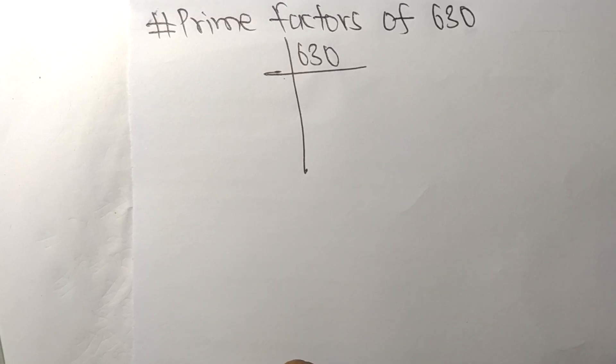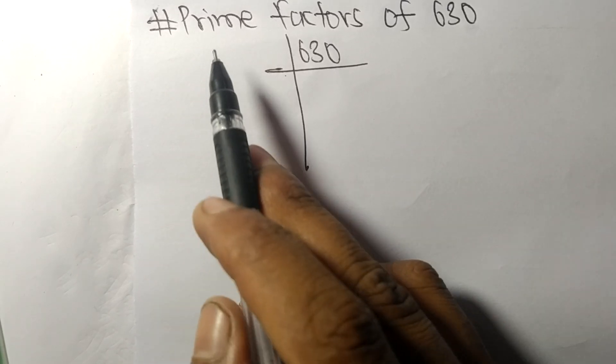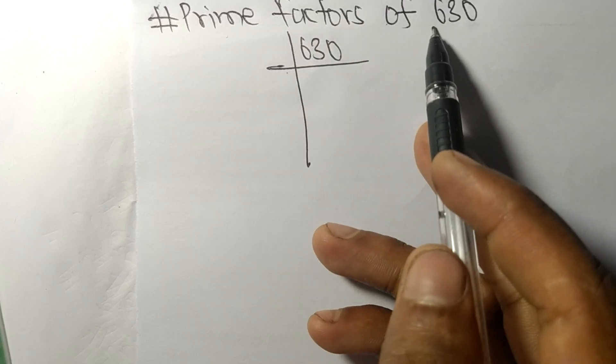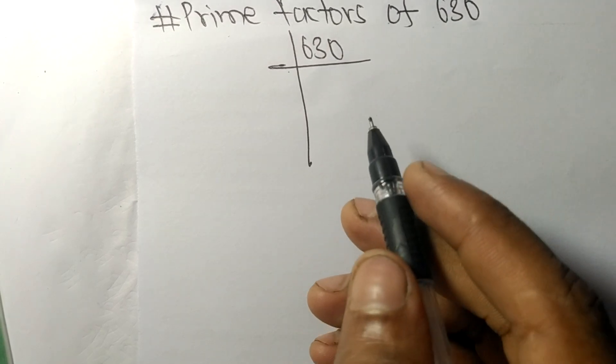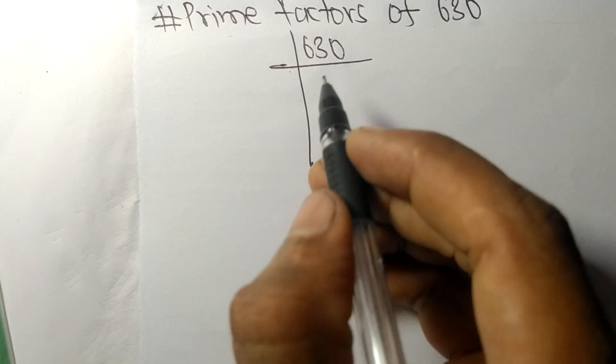So today in this video we shall learn to find the prime factors of 630. At last it contains zero, so this whole number is divisible by 2.